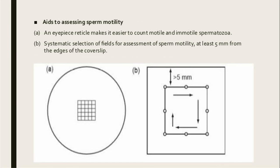Aid to assessing sperm motility: an eyepiece reticle makes it easier to count motile and immotile spermatozoa. An eyepiece reticle is a small piece of glass with a ruler or grid imposed on it that fits into the microscope eyepiece. When looking through the microscope, the reticle image is imposed upon your specimen image and is most often used to make measurements or count particles. For systematic field selection, assess at least 5 mm from the edge of the coverslip.